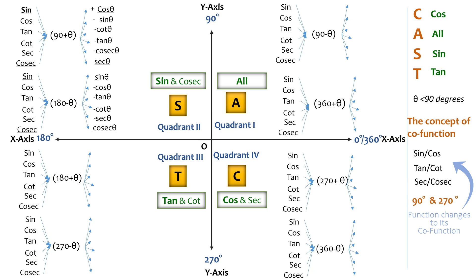For the case of 180+θ, two things to observe: there is 180° involved, so the function doesn't change to its co-function; and it's in the third quadrant where only tan and cot are positive. So tan and cot will be positive, while all others are negative. The results are as shown.